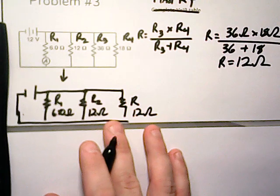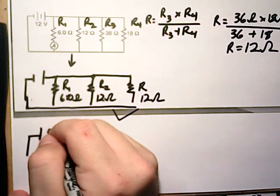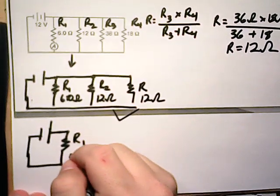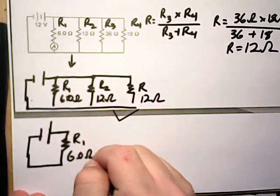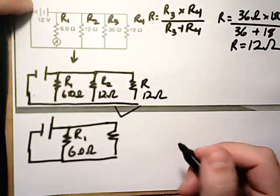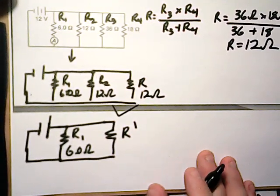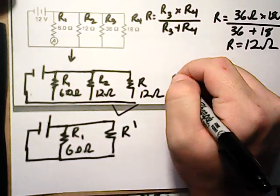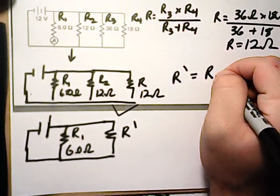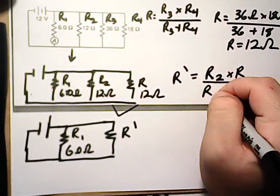Okay, for next step we're going to combine these two. So we're going to combine these two into a new one. So R1 still stays the same as 6.0 ohms. Then we have some new R which we'll call R prime or R quotation mark R prime. So R prime is going to be equal to R times R2 or let's just go in order. R2 times R over R2 plus R.